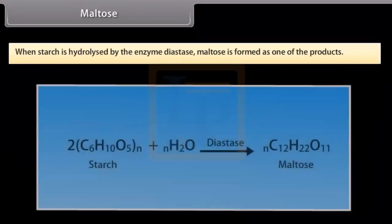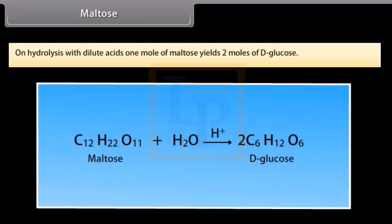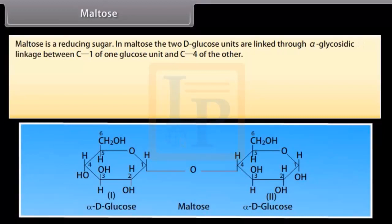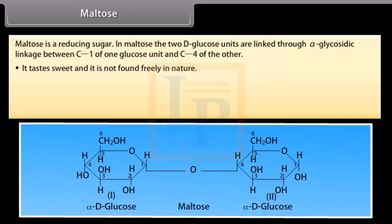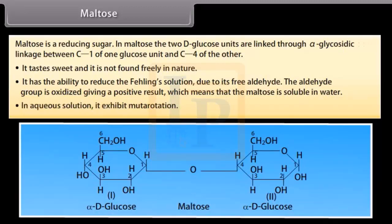When starch is hydrolyzed by the enzyme diastase, maltose is formed as one of the products. On hydrolysis with dilute acids, one mole of maltose yields two moles of D-glucose. Maltose is a reducing sugar. In maltose, the two D-glucose units are linked through an alpha-glycosidic linkage between C1 of one glucose unit and C4 of the other. It tastes sweet and is not found freely in nature. It has the ability to reduce Fehling's solution due to its free aldehyde group. In aqueous solution, it exhibits mutarotation.